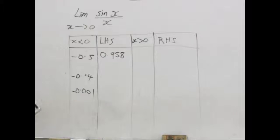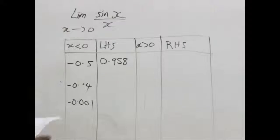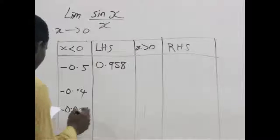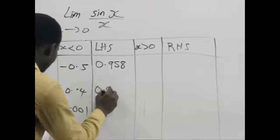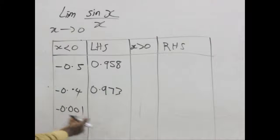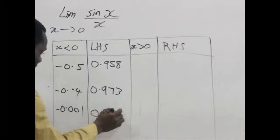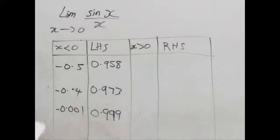We write it to a certain decimal place which is 0.958. Using that same method, you can calculate for the values of negative 0.4 and negative 0.001. When we calculate for negative 0.4, we get 0.973 and beyond. Calculating for negative 0.001 gives us 0.999 and so on.